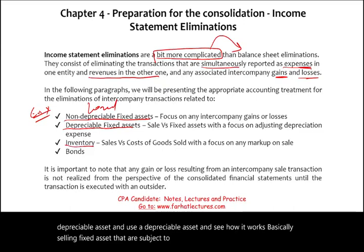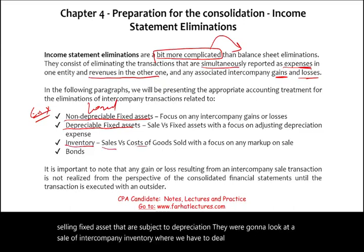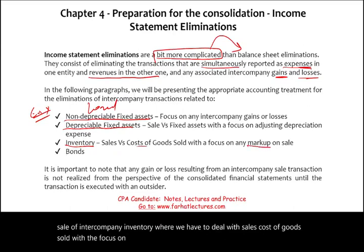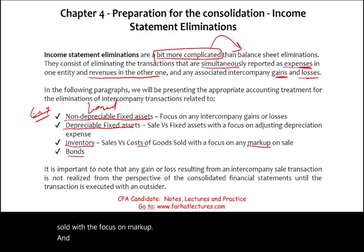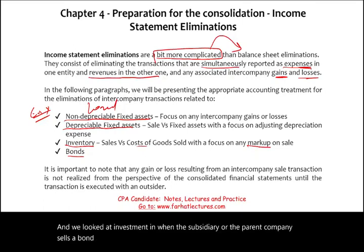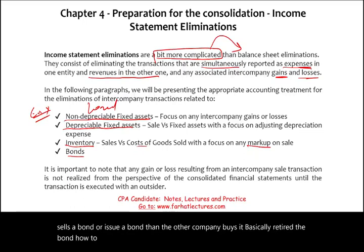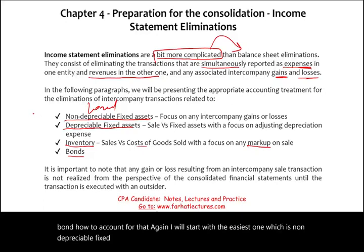Third, sale of intercompany inventory — dealing with sales and cost of goods sold with a focus on markup. Fourth, investment in bonds — when a subsidiary or parent issues a bond and the other company buys it, essentially retiring the bond. I will start with the easiest: non-depreciable fixed assets. It's important to understand the concept, then we can build on depreciable assets.